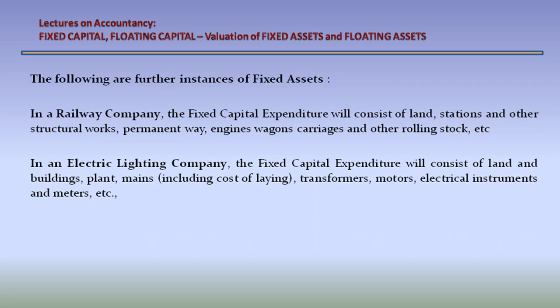In a railway company, the fixed capital expenditure will consist of land, stations and other structural works, permanent way, engines, wagons, carriages, and other rolling stock, etc. In an electric lighting company, the fixed capital expenditure will consist of land and buildings, plant, mains including cost of laying, transformers, motors, electrical instruments, and meters, etc.